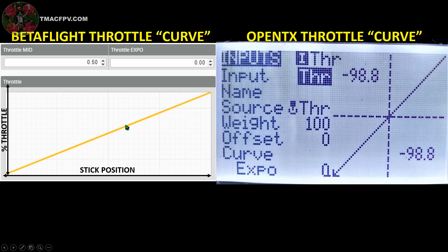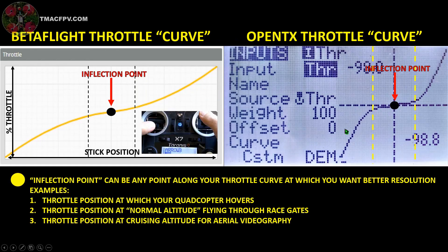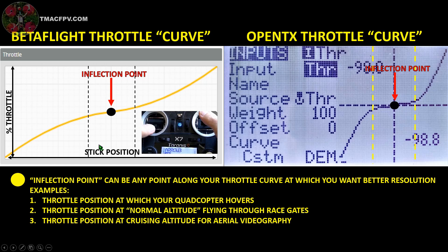This is depicted on the left here with a Betaflight throttle curve and on the right with the OpenTX throttle curve in my Taranis X7. If we want greater resolution and finer throttle control around a specific point in our flight profile, we want to change that linear relationship to more of a curve — an exponential curve, hence the phrase 'adding expo.' The throttle position point around which we want better throttle control we'll call an inflection point, and it can be any point along our curve at which you want better throttle resolution. By better resolution I mean you're able to move your throttle stick rather significantly which results in much smaller movements in your quadcopter — making it less sensitive, less twitchy, and much smoother around that inflection point.